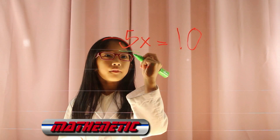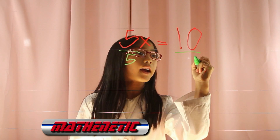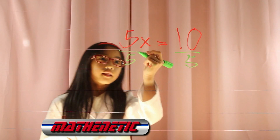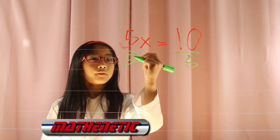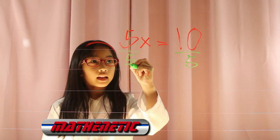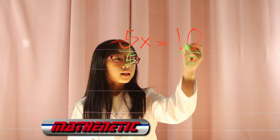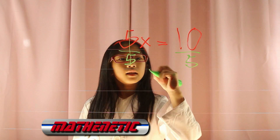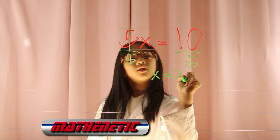If you divide 5 on one side, then you have to divide 5 on the other side. 5x divided by 5 cancels, and then 10 divided by 5 gives x equals 2.